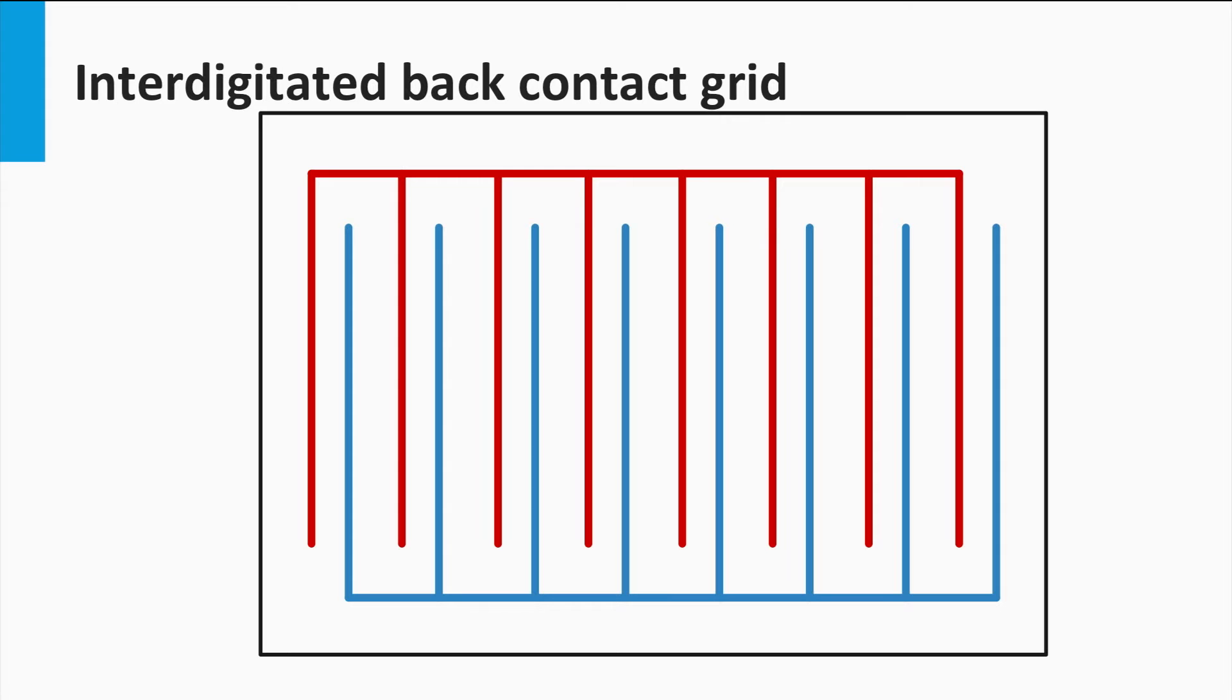An interdigitated back-contact solar cell would look like this. At the back, you have two metal grids. One collects the current of the N-type contacts, and the other collects the current of the P-type contacts.